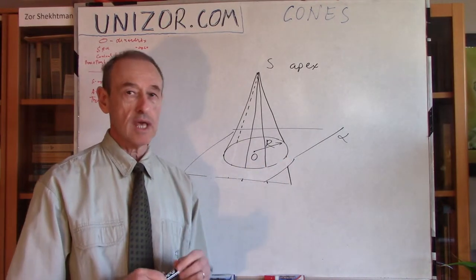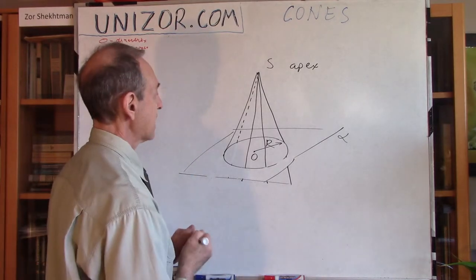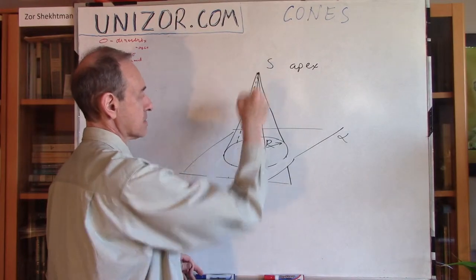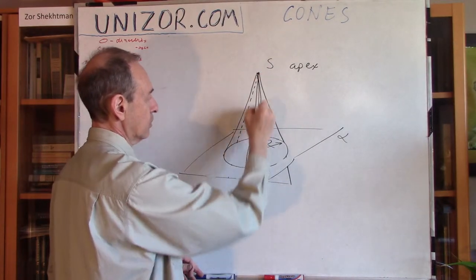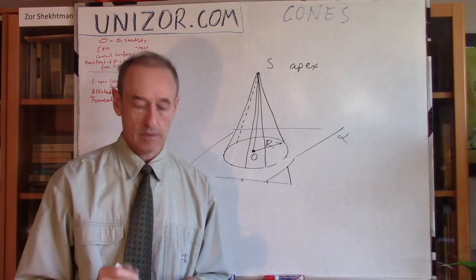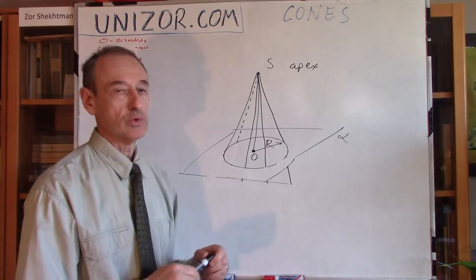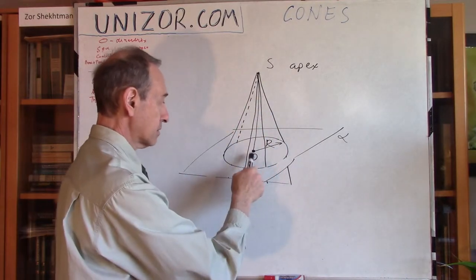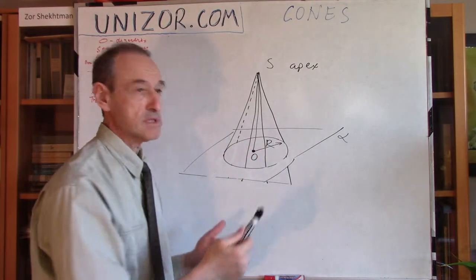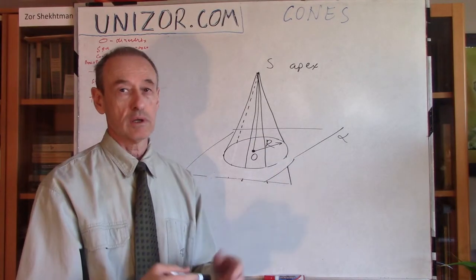Now, in most of the cases, we will be considering such a cone when if you draw a perpendicular from the apex to the plane, to the base plane, it will fall right into the center. In which case, we will call this cone a right, because it's a perpendicular, goes straight to the center. And circular, obviously, because at the base is a circle. So, it's a right circular cone.